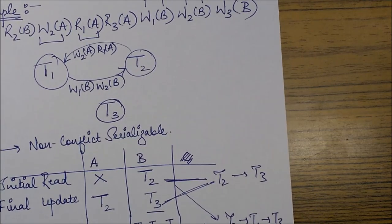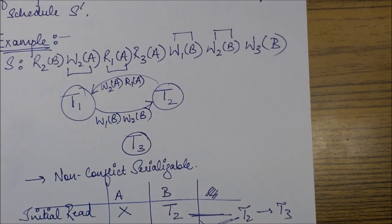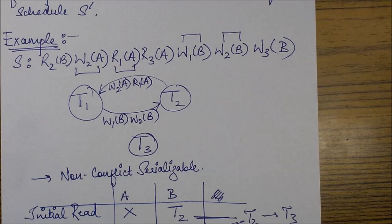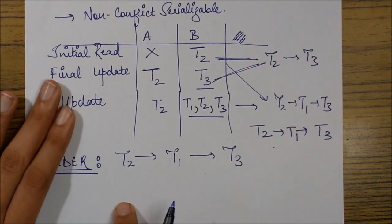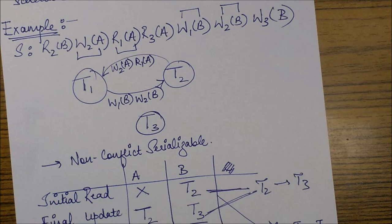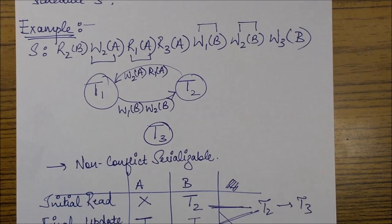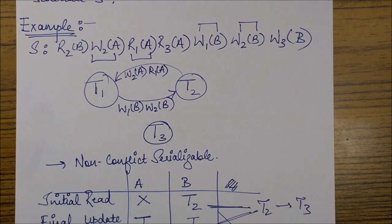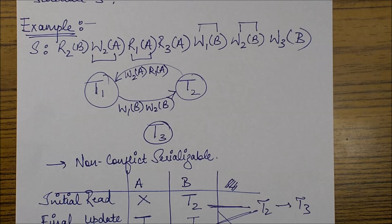We can also check the read-write sequence — there is no violation of read-write sequence in the order T2, T1, T3. Hence T2 T1 T3 is the final serial order obtained. Hopefully you have understood the concept of view serializability with clarity. If you have any doubts, please post them in the comments. If you like the video, please like it and keep following for upcoming videos. Thank you.